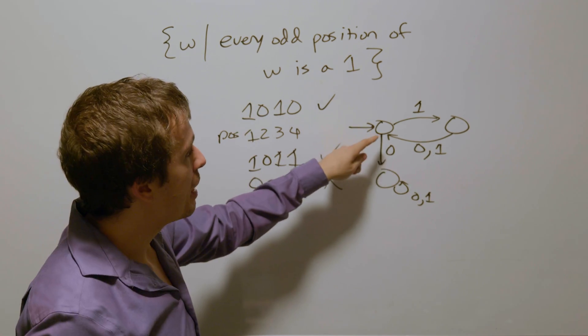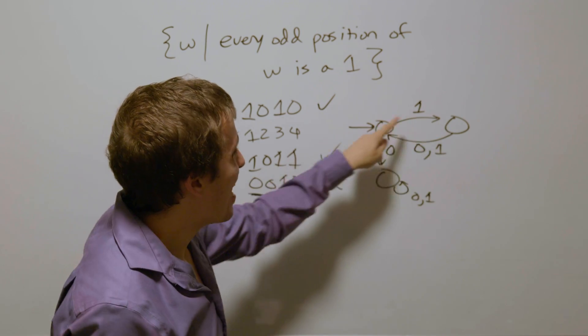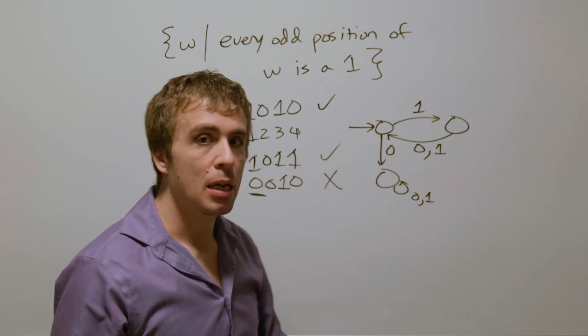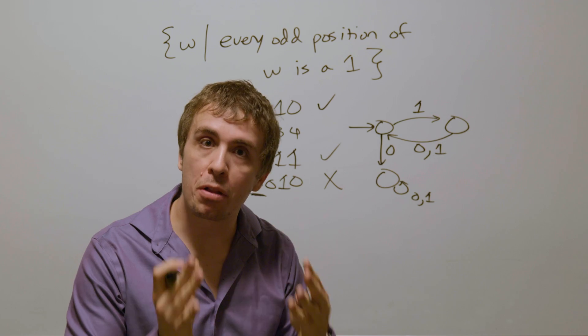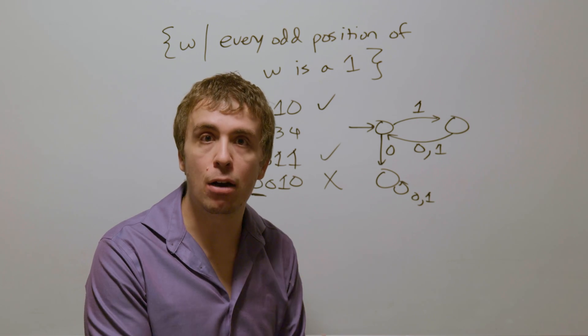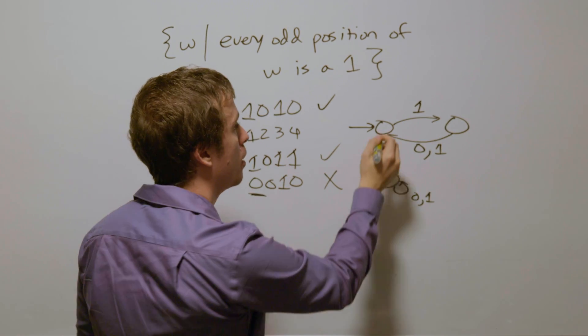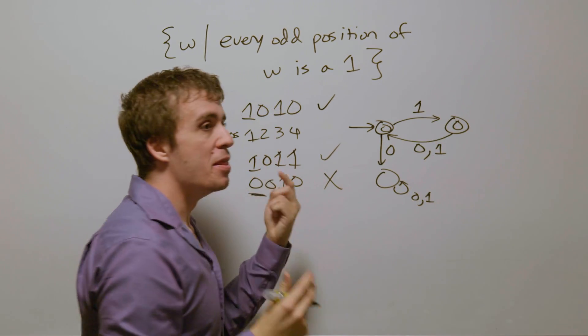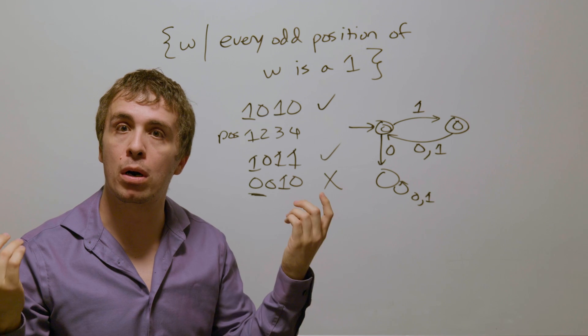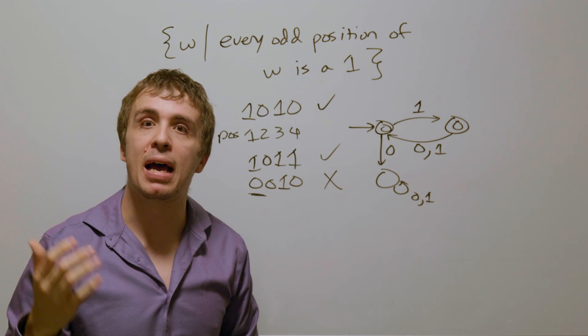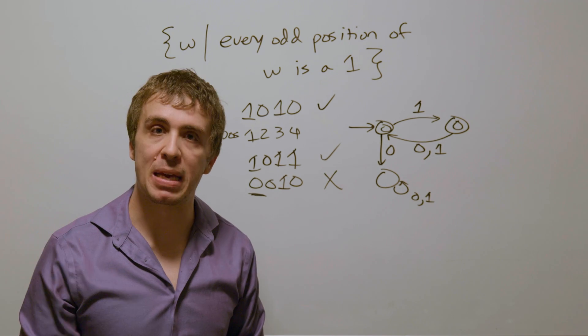But let's think about accepting states. If we're in either of these two states, it's still the case that all the odd positioned characters are ones. And so therefore, both of these states should be final. And so therefore, this is a DFA for all of the binary strings that have odd positions being a one.